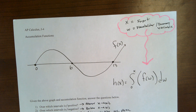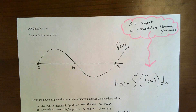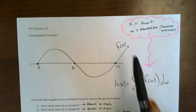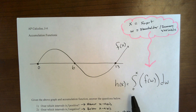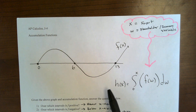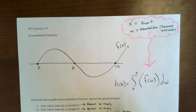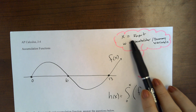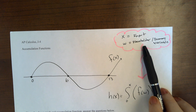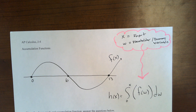Hi guys. Here is Jay 4. We're still working with accumulation functions. What we've got here is a graph of f, and then we've got this accumulation function h. And h is defined as the integral from 0 to x of f of w, dw. And in this accumulation function, we've got two variables, x and w. x is the input and w is what's called a placeholder or dummy variable.